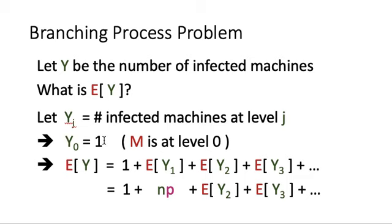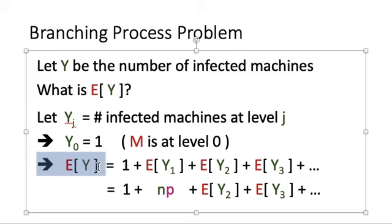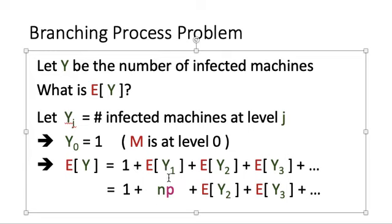Since M is at level 0, Y_0 equals 1. The total Y can be expressed as Y_0 + Y_1 + Y_2 + Y_3 + ... By linearity of expectation, E[Y] = E[Y_0] + E[Y_1] + E[Y_2] + ... which equals 1 + E[Y_1] + E[Y_2] + ... We know E[Y_1]: there are N machines at level 1, each infected with probability P independently, so E[Y_1] = NP.